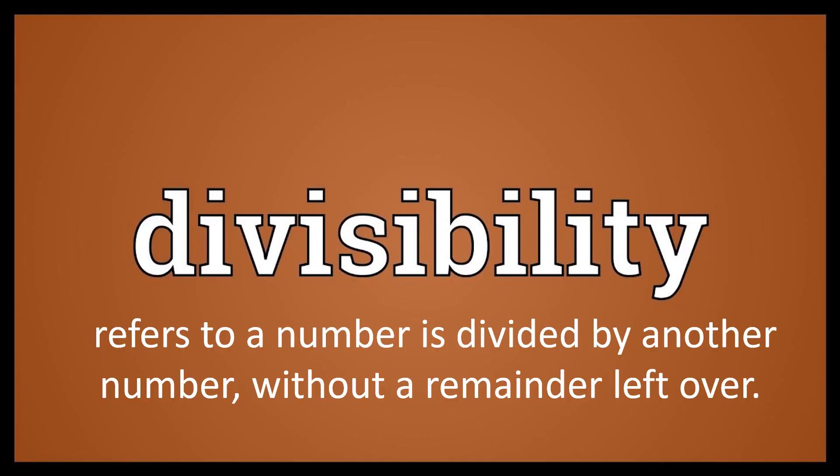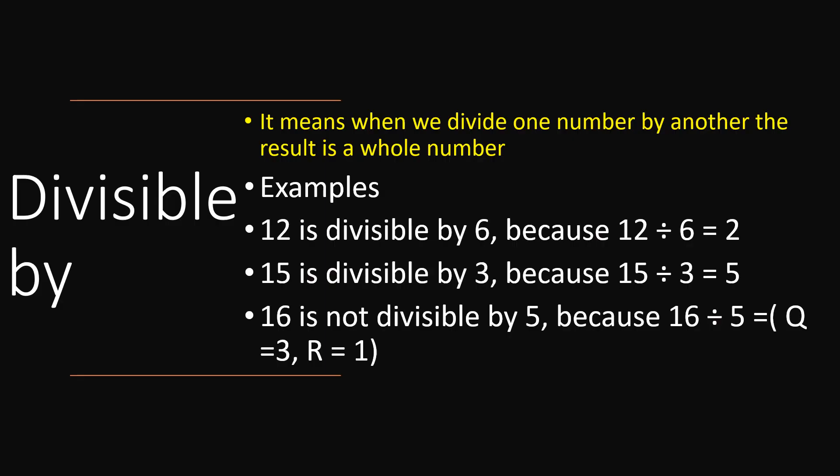What is divisibility? Divisibility refers to a number being divided by another number without a remainder left over. When we divide one number by another, the result is a whole number. For example, 12 is divisible by 6 because 12 divided by 6 equals 2 — no remainder.